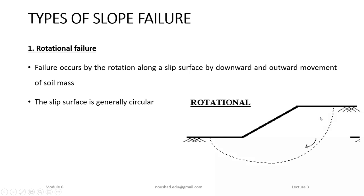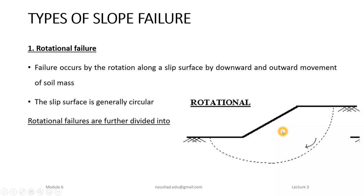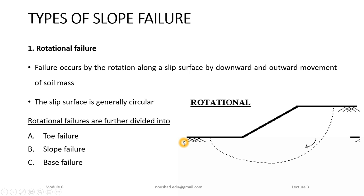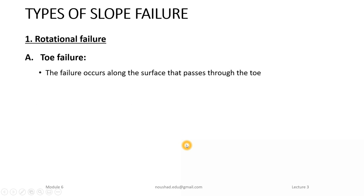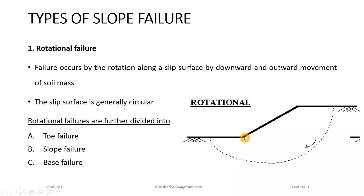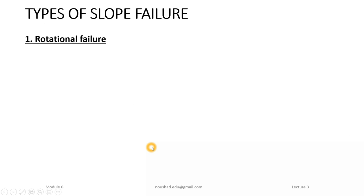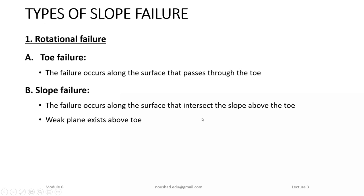The slip surface in rotational failure is generally a circular arc. Rotational failure is divided into three sub-types based on the location of the failure surface: toe failure, slope failure, and base failure. In toe failure, the failure surface passes through the toe of the slope.